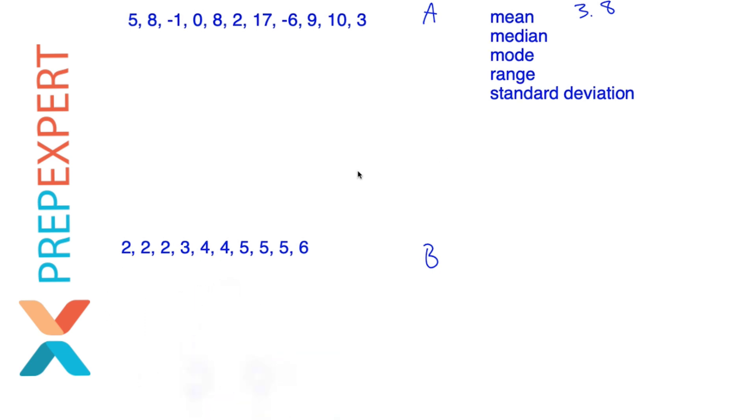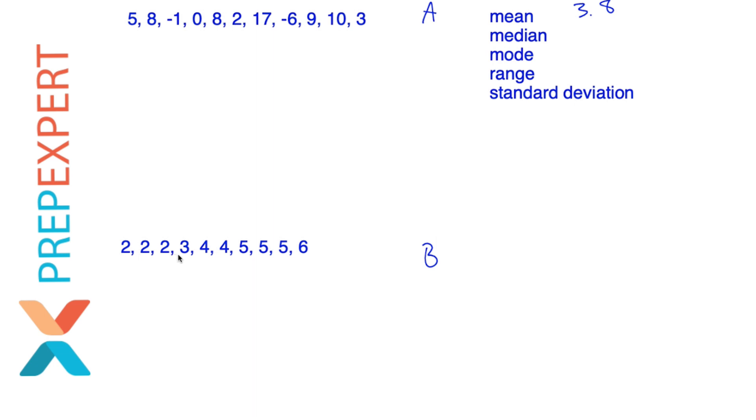Now, as it turns out, this data set's already placed in order. So I can just count one, two, three, four, five, that's my fifth value. Sixth value is four as well. So it looks like then that my median is the average of four and four, which is of course, four. So my median for the data set B is four.